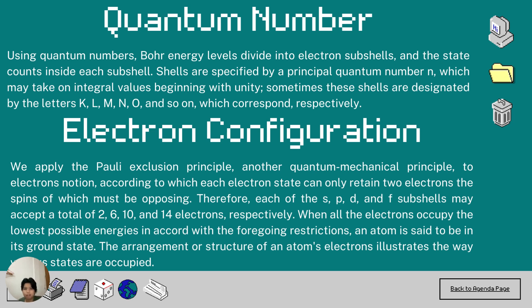For the electron configuration, we apply the Pauli exclusion principle, another quantum mechanical principle to electrons motion, according to which each electron state can only retain two electrons, the spins of which must be opposing. Therefore, each of the S, P, D, and F subshells may accept a total of 2, 6, 10, and 14 electrons respectively. When the electrons occupy the lowest possible energies in accord with the foregoing restrictions, an atom is said to be in ground state.